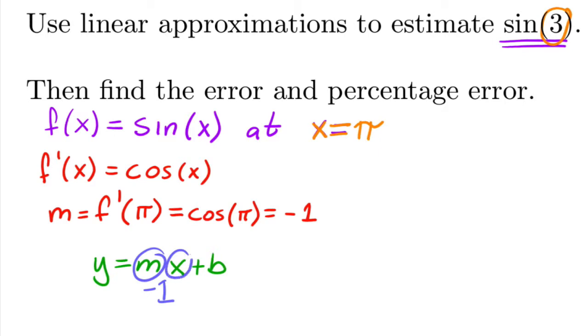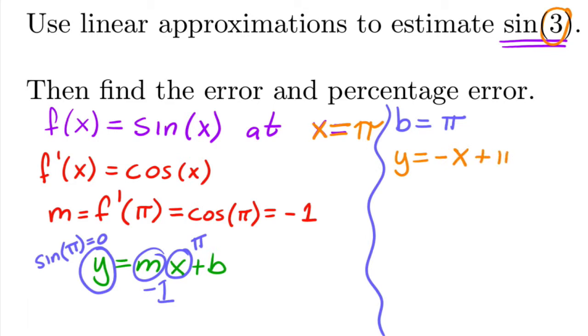The x value which is π, and then the y value we find, remember, by plugging our point π inside of sine. So this is going to be sine of π which is zero. So then we get a value for b of simply π. So our tangent line is going to be y is equal to negative x plus π.